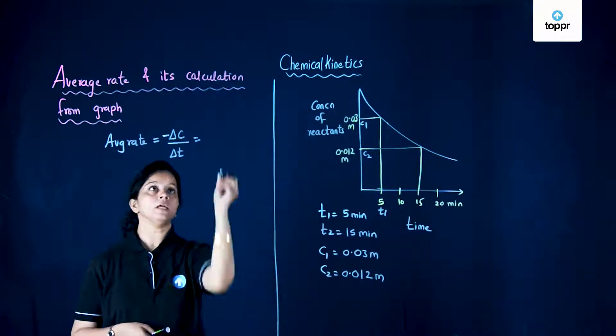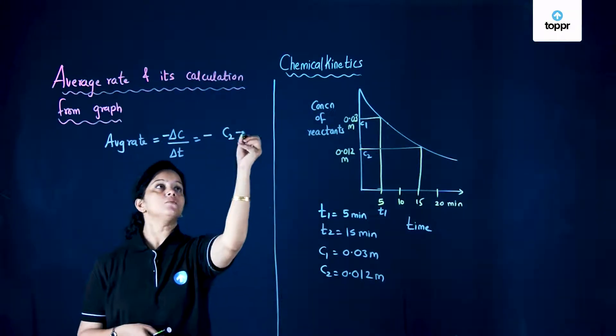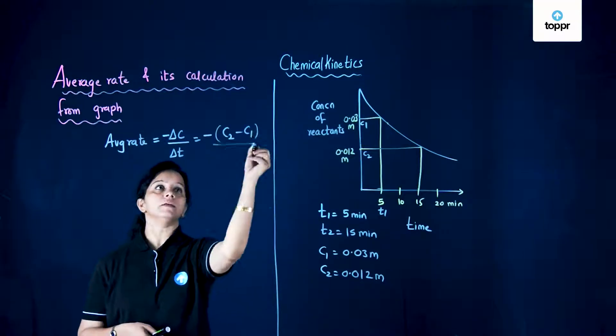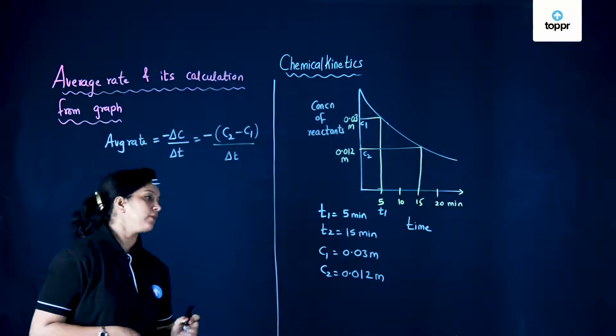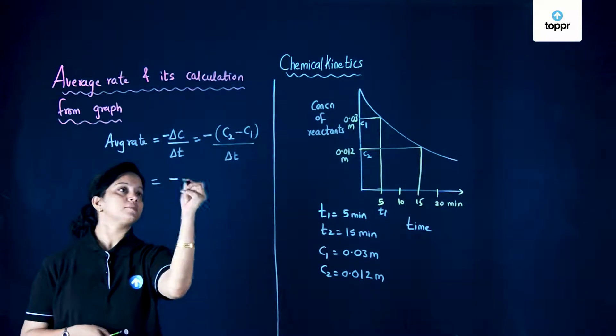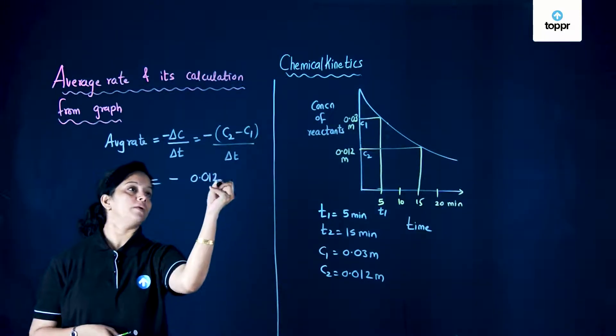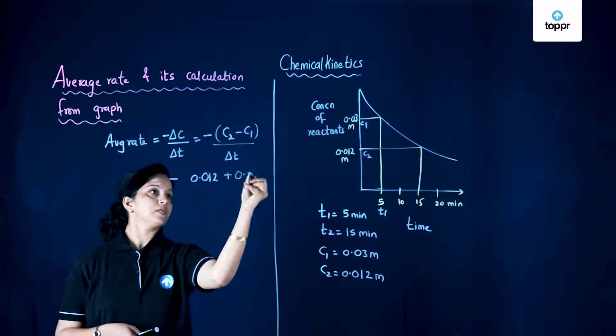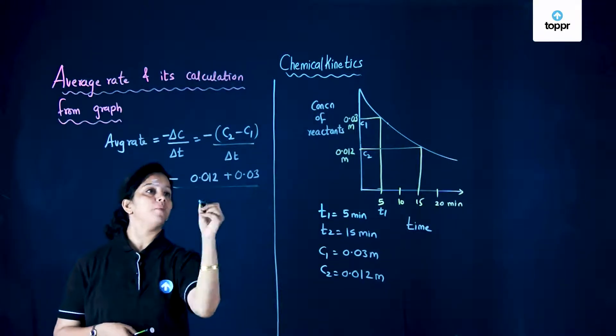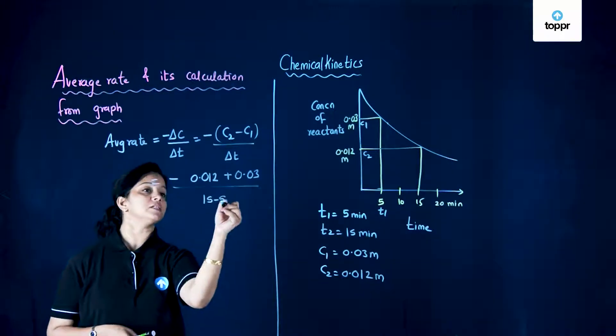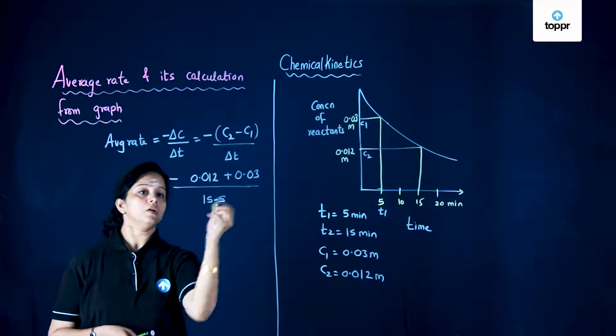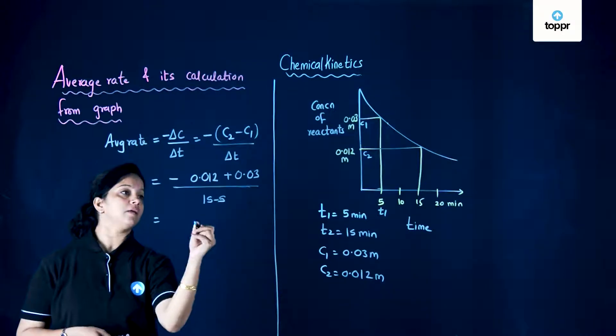Now let us substitute the value. The value of c2 is 0.012 plus 0.03 upon delta t, 15 minus 5.